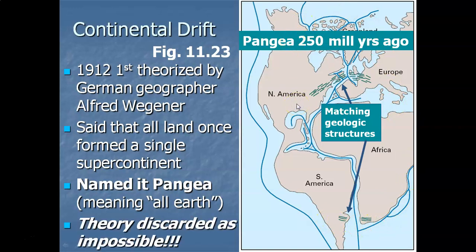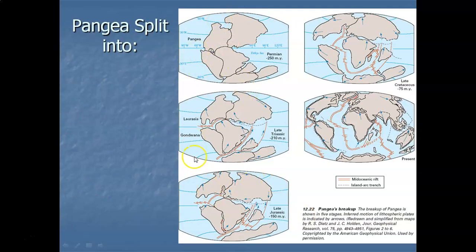Now, Wegener's 1912 article was totally discarded at the time. It seemed impossible, and geologists and geographers considered it ridiculous. The reason was that while the continents appeared to fit together, Wegener couldn't explain how they moved — he couldn't come up with a mechanism. That's why his theory was discarded. But let's move on to what he published about the breakup of Pangea.